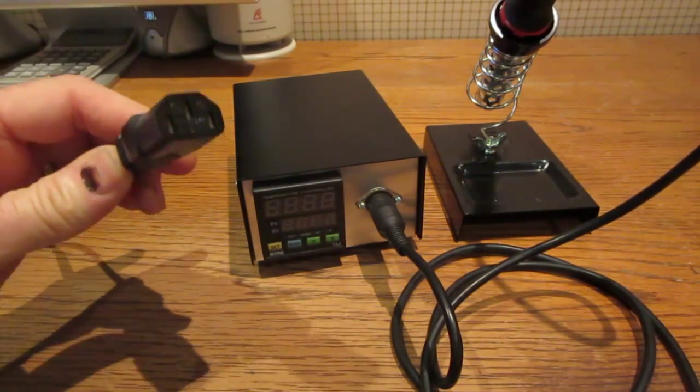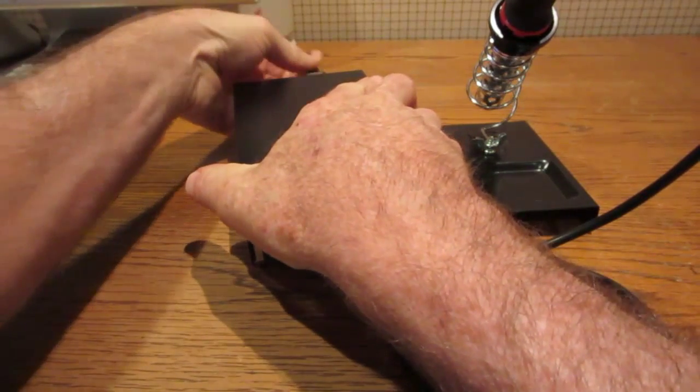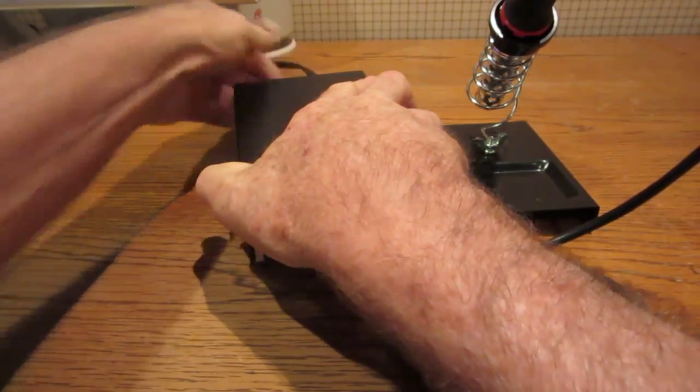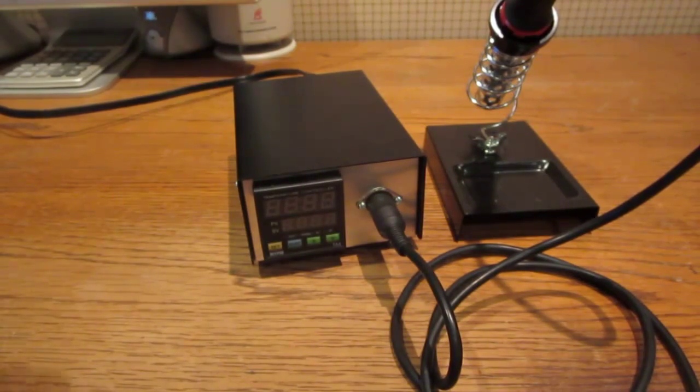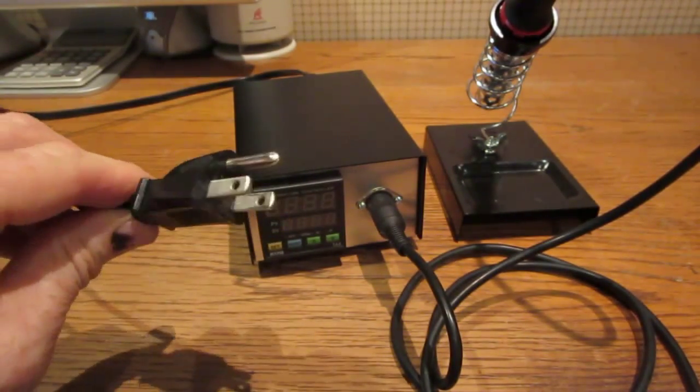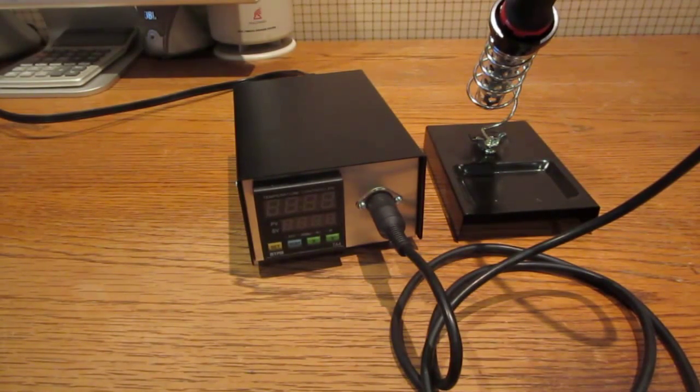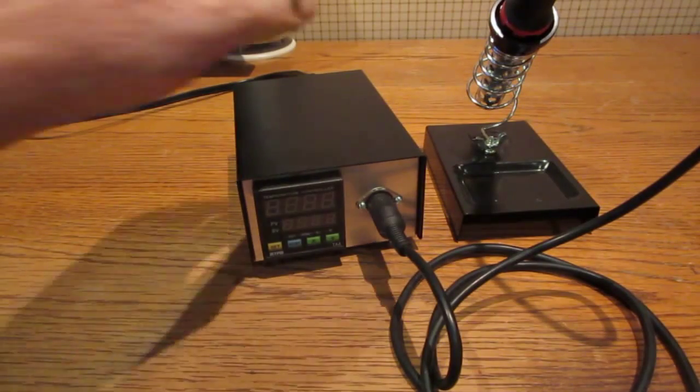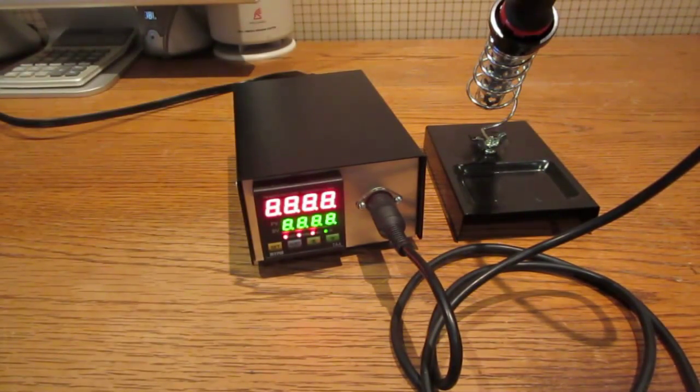A standard IEC power cord is used to plug the unit into an AC outlet. The unit is switched on and the soldering iron begins to heat up.